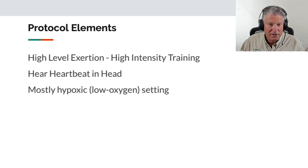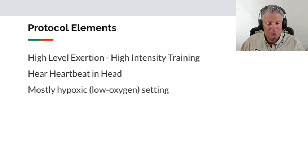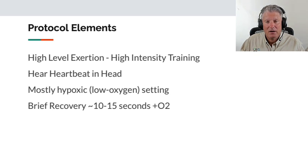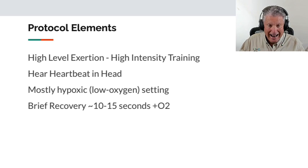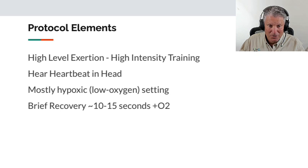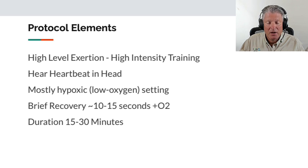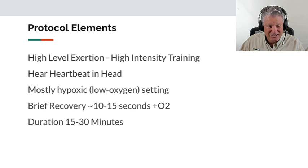We also do mostly hypoxic work, meaning most time on minus O2, with very brief 10-second or so exposures to oxygen. Once you get to the point where you've got that blood flow circuit active, you don't want to stop it, because it's so much discomfort and work to reach that blood flow concentration in the brain. Normal duration of the workout was 15 to 30 minutes — this one was about 18 to 20 minutes.